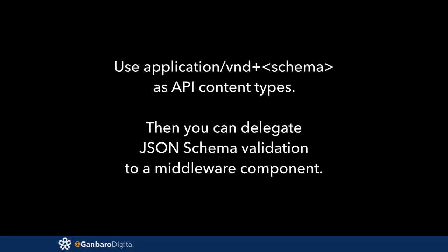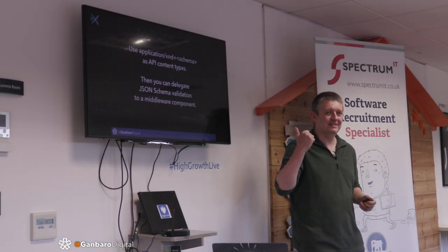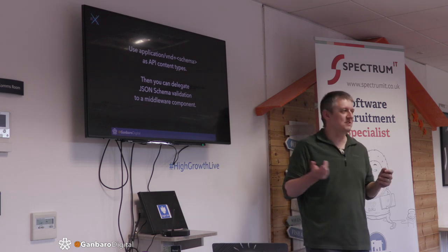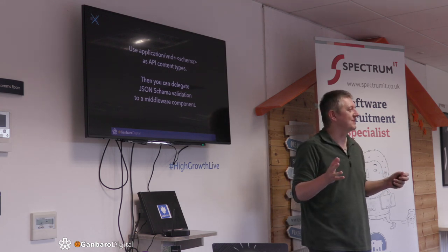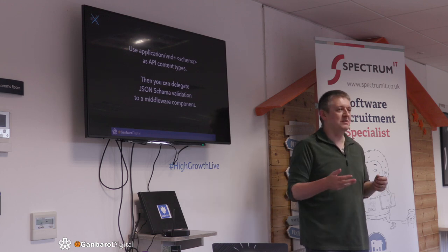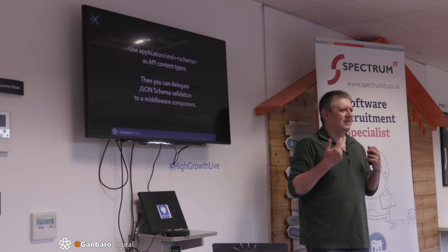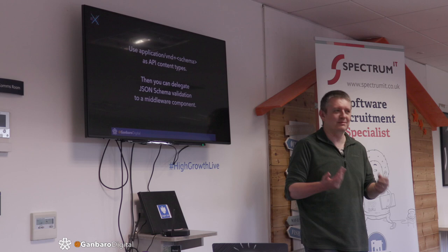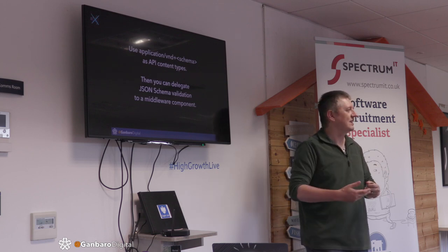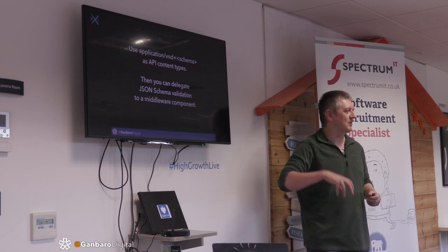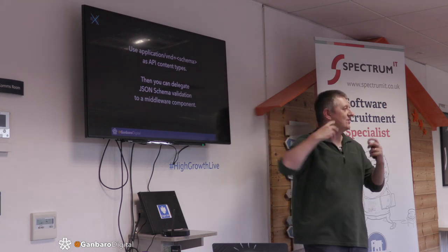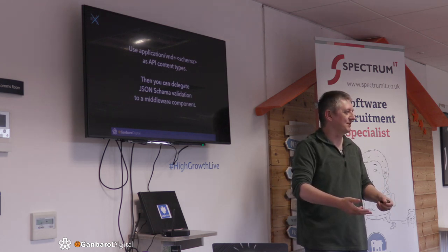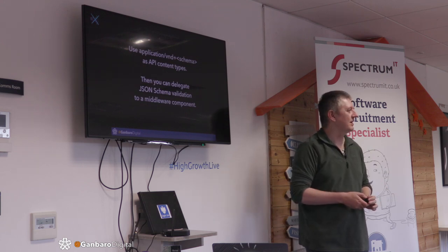Content types: instead of using application/json on your API, use the application/vnd format. You start with application/vnd and the plus symbol, then put your content-type information in. Using any sort of pipeline — Express, Symphony middleware — you take your JSON Schema stuff and put it as middleware in front of all your other code, so it fires on any API request coming in. You use the schema name as your content type, automatically look up your schema, validate it, and reject it in one place. It's one piece of code.